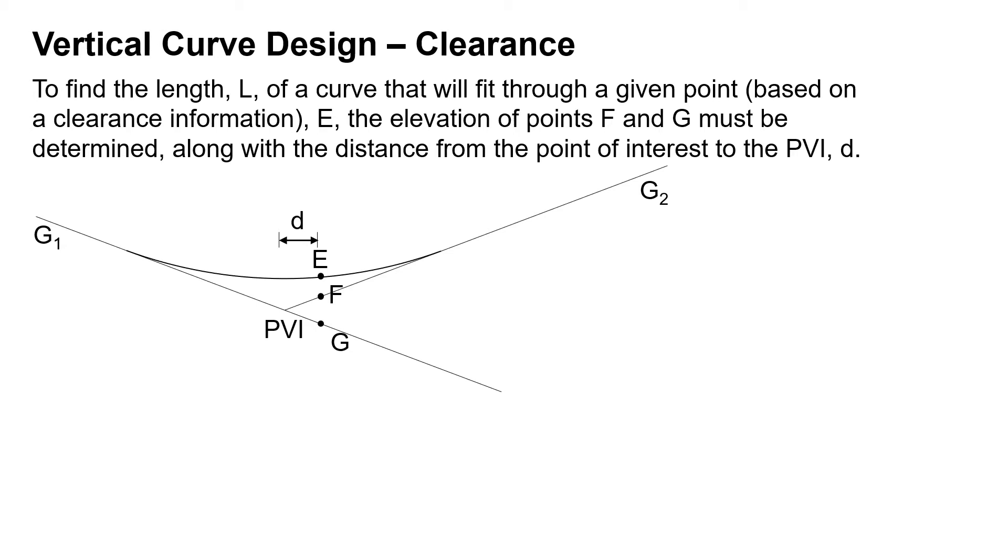You've got the same look whether it's a sag or a crest. Your point on the curve is E, your next closest tangent is F, and then your further away tangent is G.